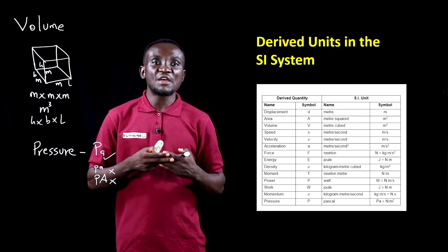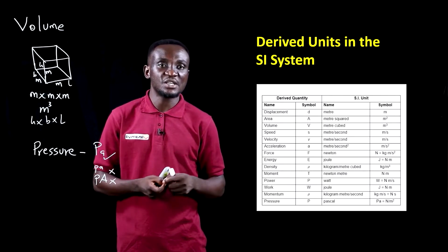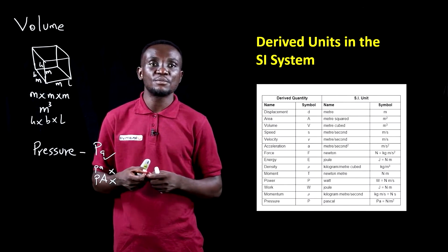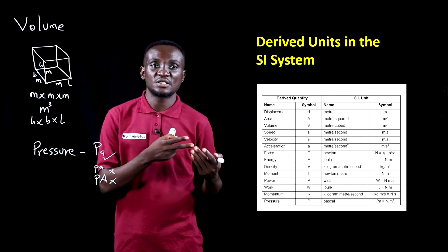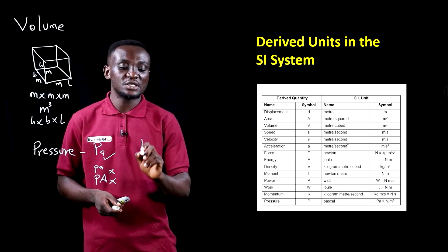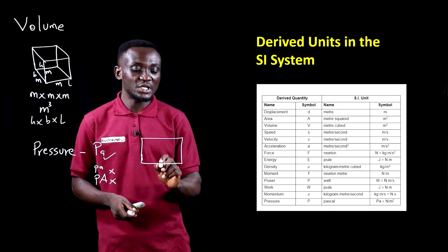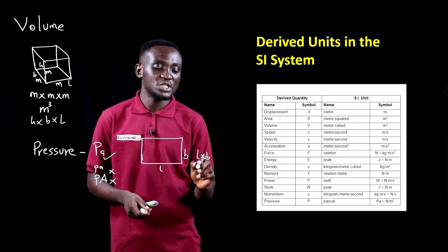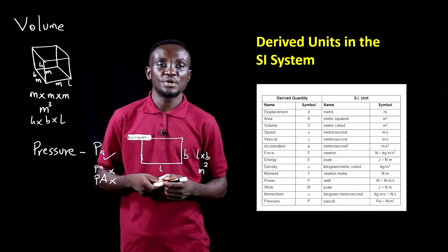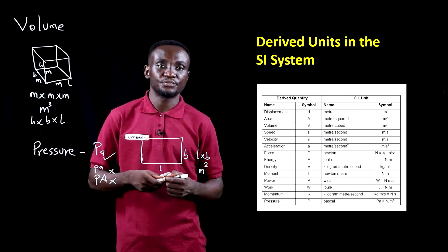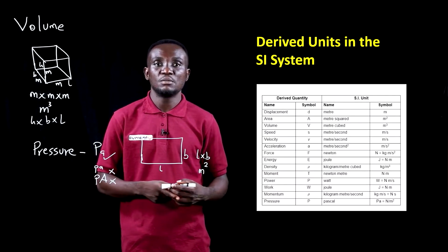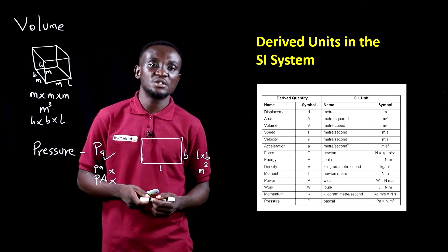There are a number of other derived units that do not necessarily have dedicated instruments, but they have their own symbols and units. These include displacement or distance in meters, area in meter squared — length times breadth gives meter squared — and volume in meter cubed. Further derived quantities include force measured in newtons, work and energy measured in joules, power measured in watts, and others as shown in the image.